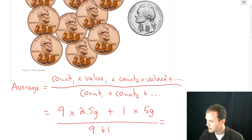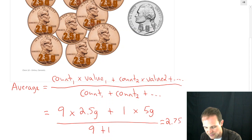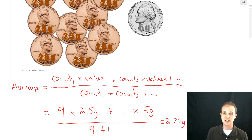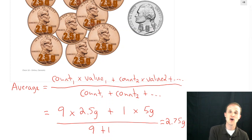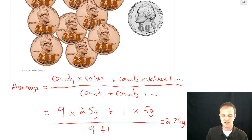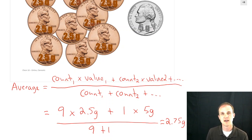If you do that math out, you get 2.75 grams. You'll notice that our average is getting really close to the mass of a penny, because we have so many more pennies than nickels. Is there a single penny in our collection that weighs 2.75 grams? No — they all weigh 2.5 grams. Is there a nickel that weighs it? No. But the average coin in here weighs 2.75 grams.